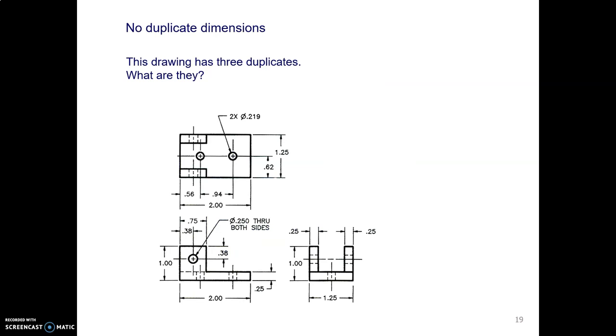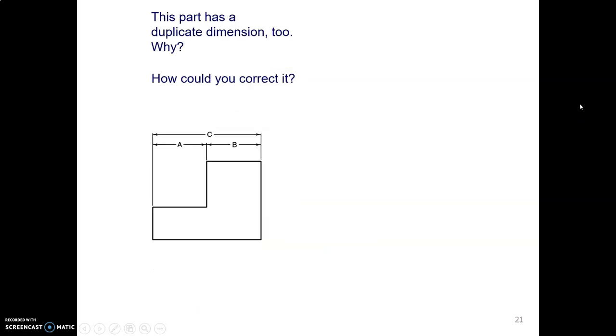We have to watch out for duplicate dimensions. There are three of them in this drawing. You might have remembered going through this last year. And there they are. One and a quarter, one and a quarter, one, one, two, two. So we need to get rid of some of those.